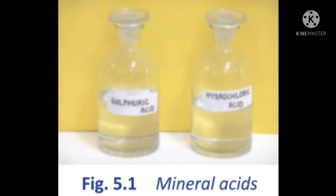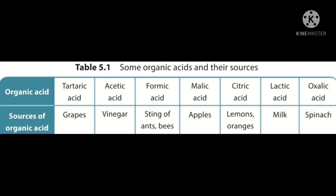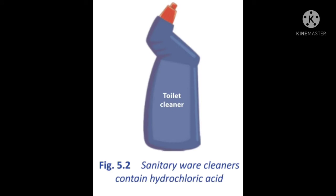Organic acids occur naturally in animal and plant materials. We have learned the organic acids and their sources: tartaric acid is in grapes, acetic acid in vinegar, formic acid from the stinging of ants and bees, malic acid in apples, citric acid in lemons and oranges, lactic acid in milk, and oxalic acid in spinach.